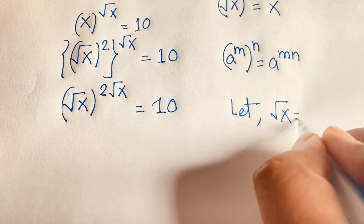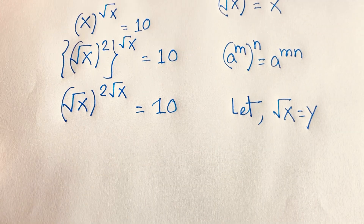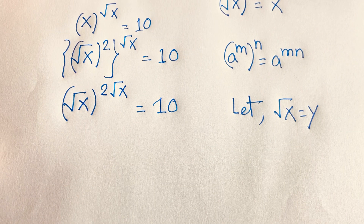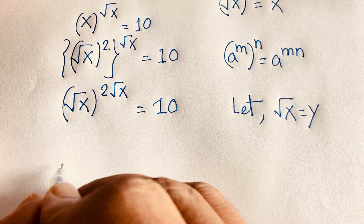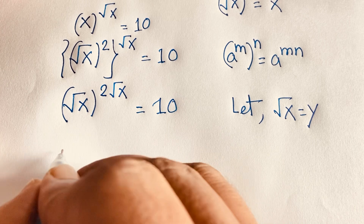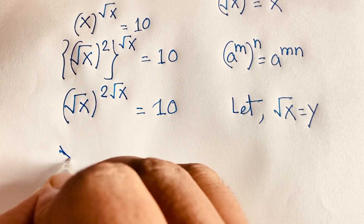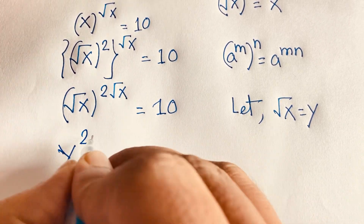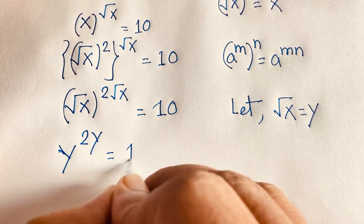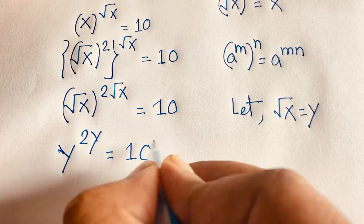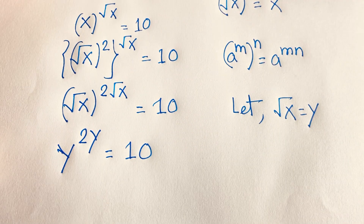Now at this moment, let square root x equal y. So this equation becomes: y to the power 2y is equal to 10.